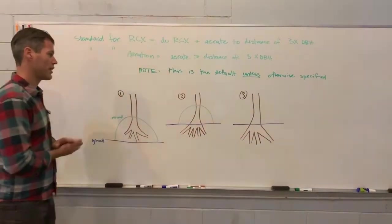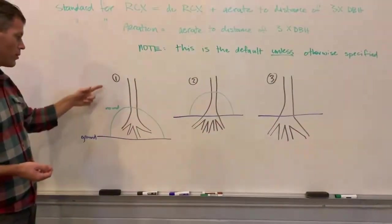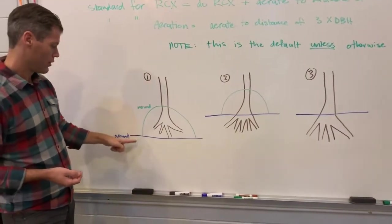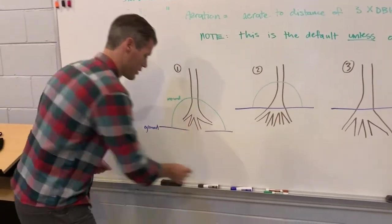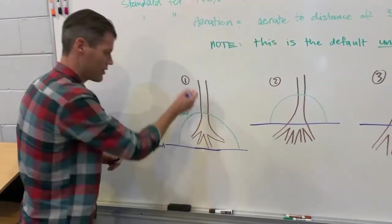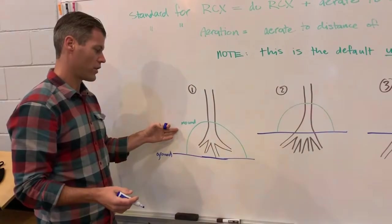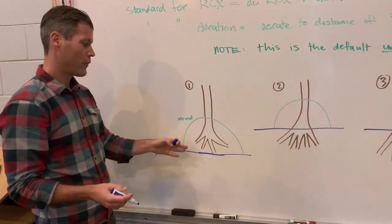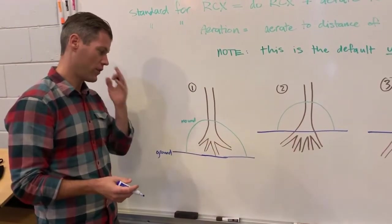Let me show you three scenarios that you might encounter. This scenario, number one, blue is the ground, brown is the tree, green is the mulch volcano. In this case, the tree has been planted high. We see this very often.